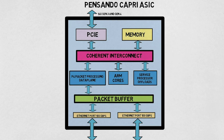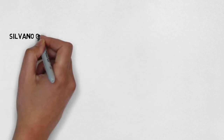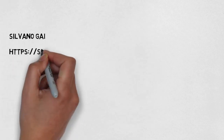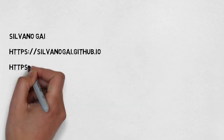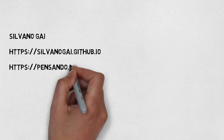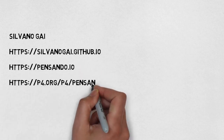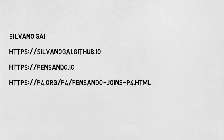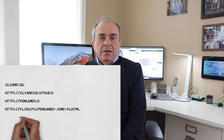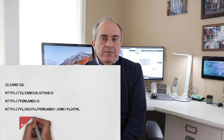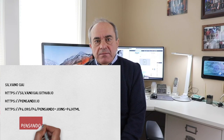I hope this short presentation has given you an idea of what the Capri ESIC is and which are its main components. Don't forget to follow me on my blog on GitHub Pages at silvanoguy.github.io. I hope this was interesting for you. Thank you so much for listening.